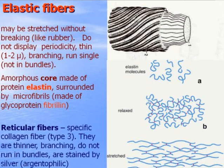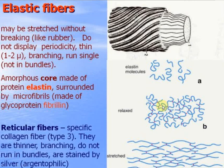Elastic fibers may be stretched without breaking, like rubber. They do not display periodicity, and they are thin, branching, and run as single fibers — not in bundles — contrary to collagen fibers. They contain an amorphous core made of protein elastin, which is produced by fibroblasts. The core of elastin is surrounded by microfibrils made of glycoprotein fibrillin, also produced by fibroblasts. The molecule of elastin contains transverse bridges. This network is shorter in the relaxed state, and longer when stretched.